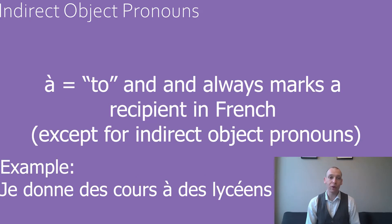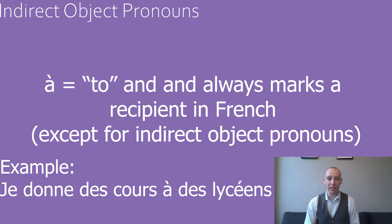In French, the preposition à is the equivalent to the word to in English and can help to identify a recipient as an indirect object. But unlike in English, it's always present, so it's a little bit easier to identify a recipient in French.